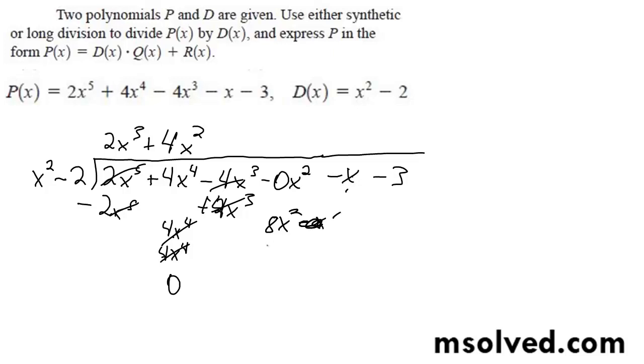Alright, so those cancel out. So we get minus, and then this becomes plus, and you end up with positive 13. So you get negative x, and then plus 13.